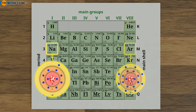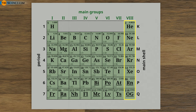Within each period, the element on the far right of the periodic table has the highest force of attraction between its nucleus and its shell. This configuration makes the element extremely stable. Since these elements are gaseous, they are referred to as noble gases.